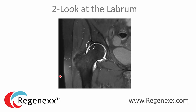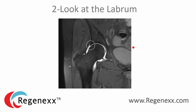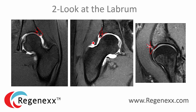Number two: look at the labrum. The labrum is the lip around the socket for the ball-and-socket joint. I've shown you three different labral tears here. You can see the labrum, and there's a white or light area in the labrum that represents a tear — you can see this in all three examples. Going back, a normal labrum doesn't have much white in it, whereas the torn ones show those light areas.